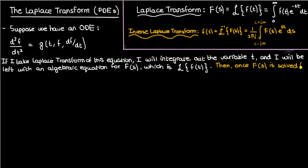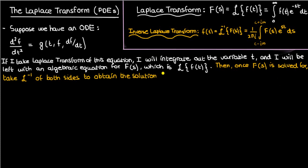Once I've solved this algebraic equation for capital F of s, I can take the inverse transform of both sides to get the solution f of t. The inverse transform essentially converts F of s back to f of t. This inverse transform stage is often the hardest part, because there's a lot of work in manipulating capital F of s, and many complicated functions whose inverse transforms are nearly impossible to find.